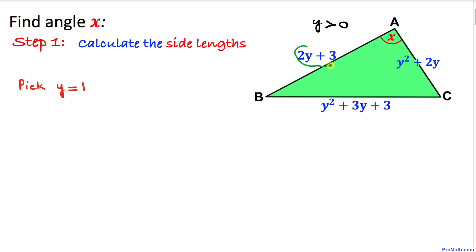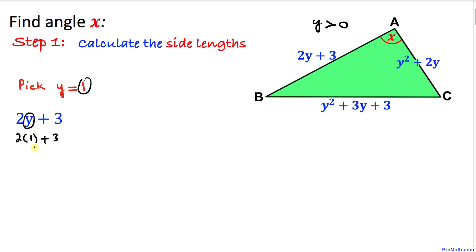Let's plug y equals 1 into the first side, 2y plus 3. Replacing y with 1, we get 2 times 1 plus 3, which is 2 plus 3 equal to 5. So side AB turns out to be 5 units.